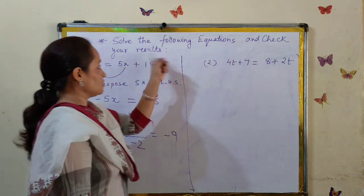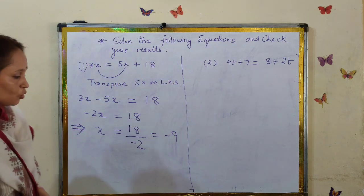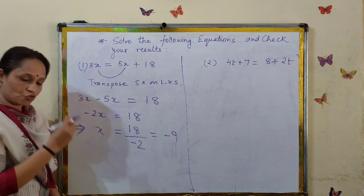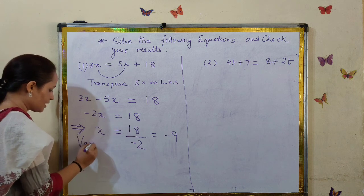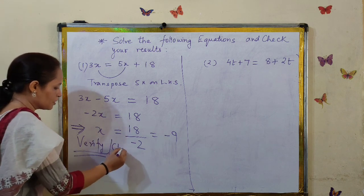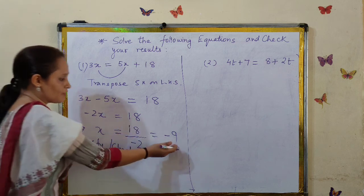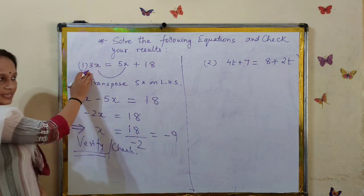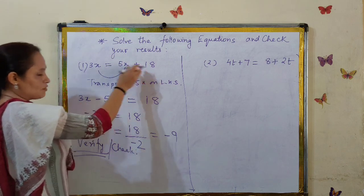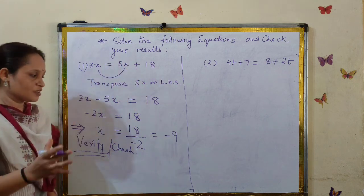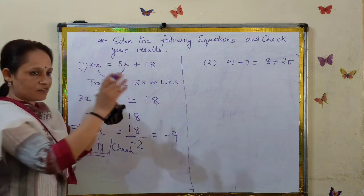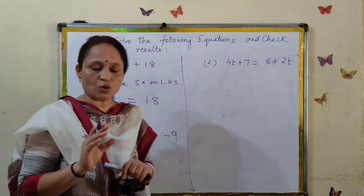We have to solve the equation and check the result as well. We have to verify whether this result is right or not. We will put this value of x on the left side of the equation first, and then on the right side, to see that both sides are equal.